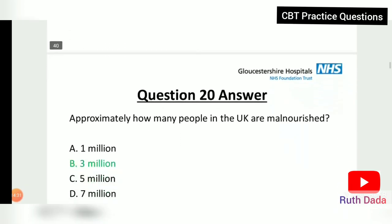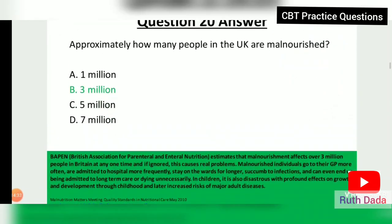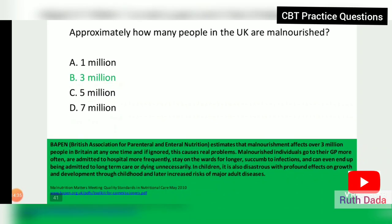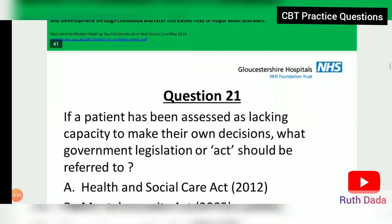Question 20: How many people in the UK are malnourished approximately? The answer is three million. According to the British Association for Parenteral and Enteral Nutrition, malnourishment affects over three million people in Britain at any one time, and if ignored this can cause real problems.